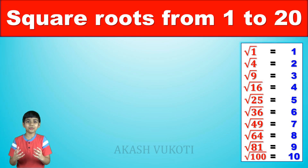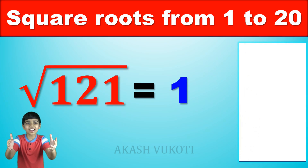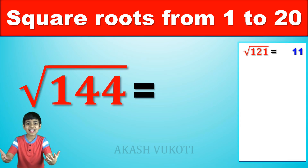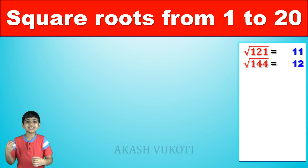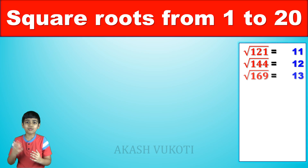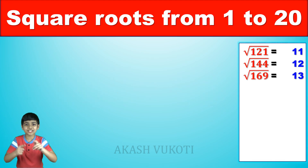The square root of 121 is — yep, you got it — 11. The square root of 144 is 12. The square root of 169 is 13. Great. The square root of 196 is 14. Amazing job.